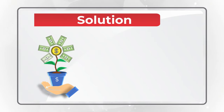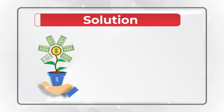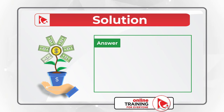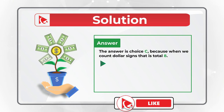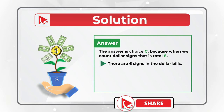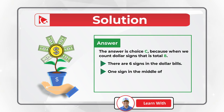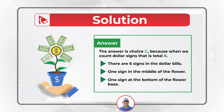I counted eight dollar signs, so my answer is choice C. The answer is C because there are six signs on the dollar bills as flower petals, one sign is in the middle of the flower, and there is one sign at the bottom of the flower base. Do you have a different answer?